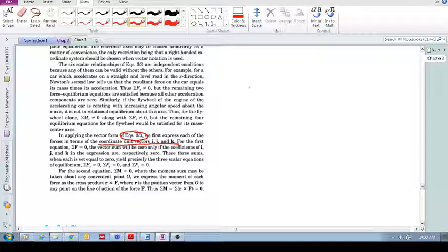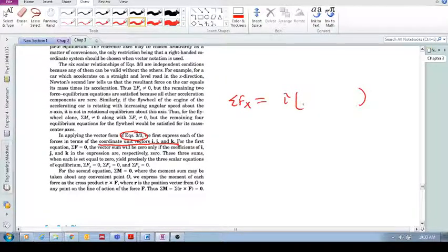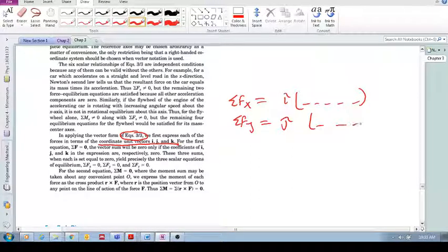Because then all we do is group your i components together to get your sum of your forces in the x, right? Sum of your forces in the x. So then you just group all the i's of all your forces. You group them together. Sum of the forces in the y, you group all the j components together. Et cetera, et cetera. Okay? But we'll look at some examples.